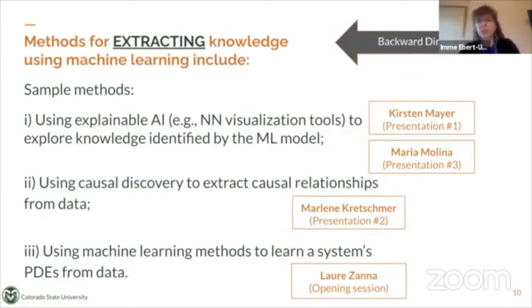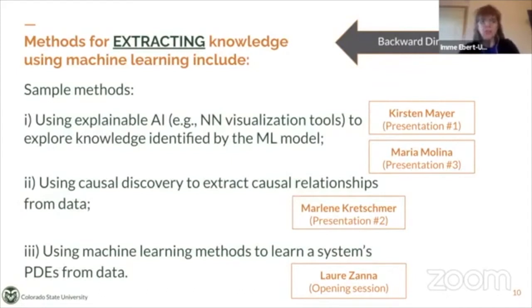In the reverse direction, you use your machine learning to extract scientific knowledge from the data. Some sample methods include using explainable AI — for example, neural network visualization tools — to explore knowledge identified by the machine learning model. You will see both Kirsten Meyer and Maria Molina talking about those topics. There's also causal discovery to extract causal relationships, and you will see Marlene Kretschmer talking about causal inference and causal discovery. Another example is using machine learning methods to learn a system's partial differential equations from data, and you saw Laura Zanner giving a great talk about this in the opening session.